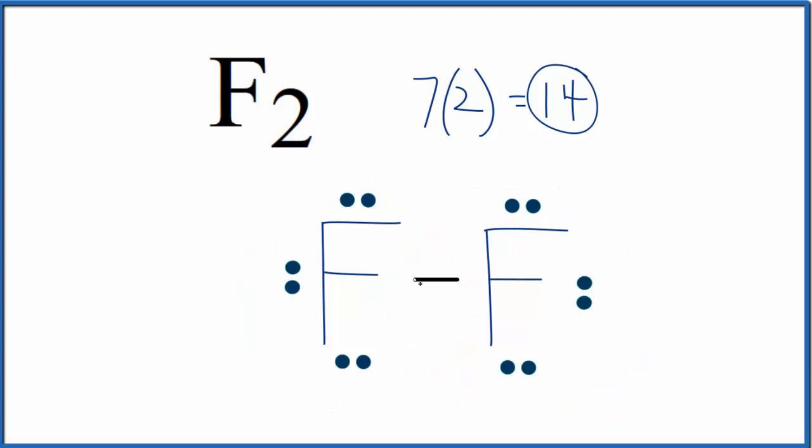If you were asked the molecular geometry, it would just be linear because there's just two atoms. The bond angle would be 180 degrees.